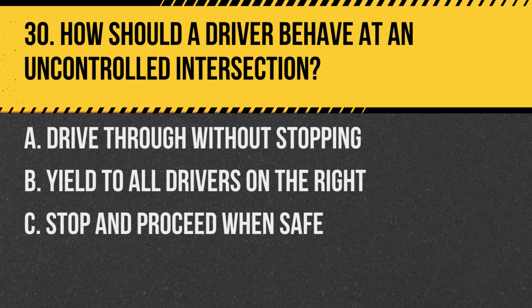Question 30: How should a driver behave at an uncontrolled intersection? A. Drive through without stopping. B. Yield to all drivers on the right. C. Stop and proceed when safe. Answer: C. Stop and proceed when safe. At an uncontrolled intersection, drivers should stop and then proceed when it is safe to do so.